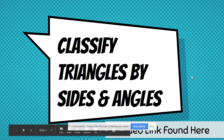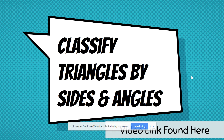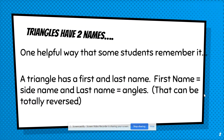Today we're going to go over classifying triangles by sides and angles. I know you've had this in your notes, but we're going to review this to make sure we've truly got it. Triangles have two names — one helpful way to remember it is that a triangle has a first name and a last name. The first name could be the side name, and the last name could be angles, or you could totally reverse it. Just make sure you're able to name each triangle by both its angle and its side properties.